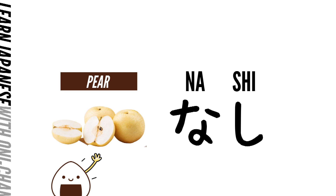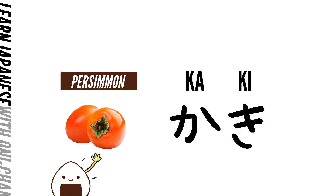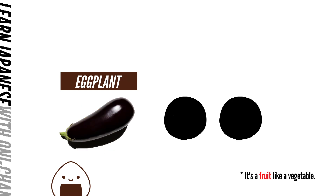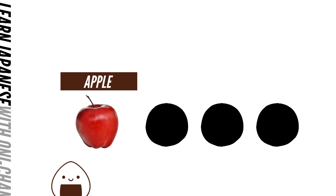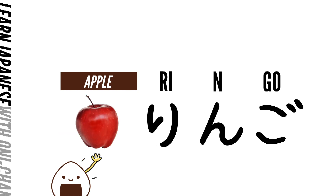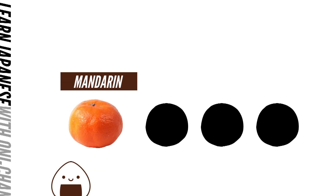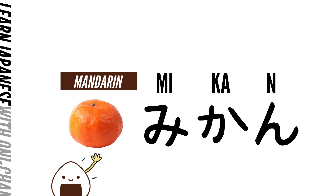Pear — Nashi. Nashi. Persimmon — Kaki. Eggplant — Nasu. Nasu. Apple — Ringo. Ringo. Mandarine — Mikan. Mikan.